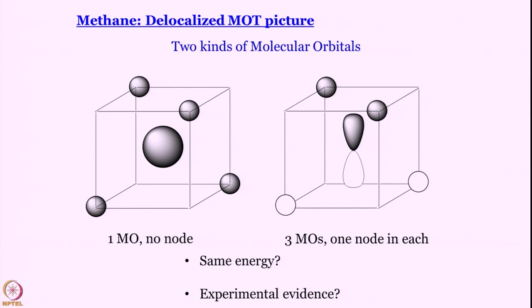What is the experimental evidence that there are indeed two kinds of MOs? The evidence comes from photoelectron spectroscopy. Ionization energy means: given an atomic or molecular orbital, provide enough energy to promote the electron to an infinitely high level — where it no longer feels the attraction of the nucleus. If I have two different MOs I can expect two different first ionization energies. I will call these ε₁ and ε₂, corresponding to ionization from the lower and higher energy levels.